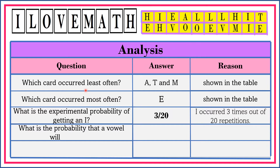What is the probability that a vowel will be drawn? If the question is probability, let's refer our answer to the letter cards. Let's count how many vowels. We have 1, 2, 3, 4. Therefore, the probability that a vowel will be drawn is 4 over 9.